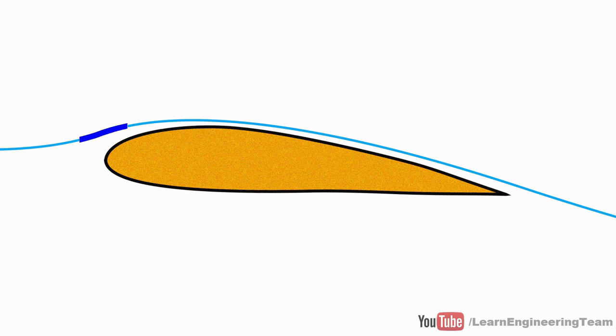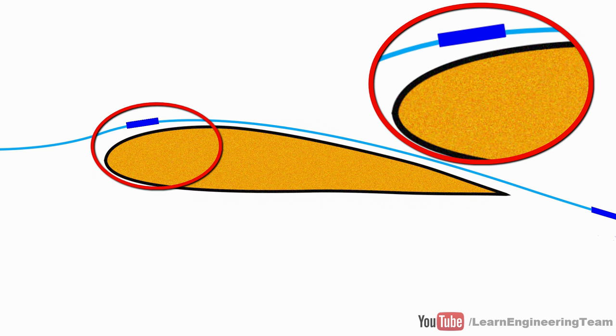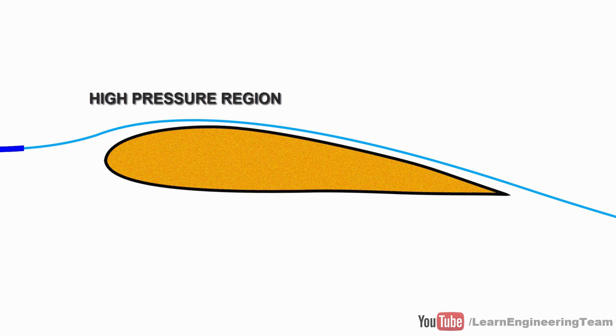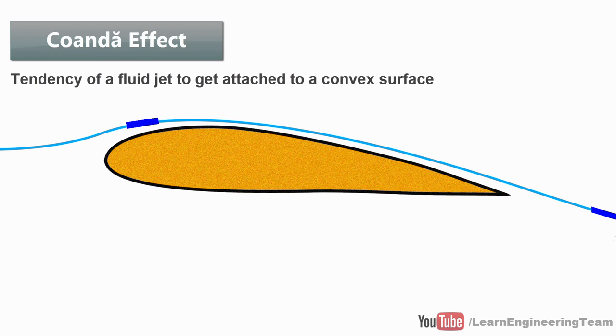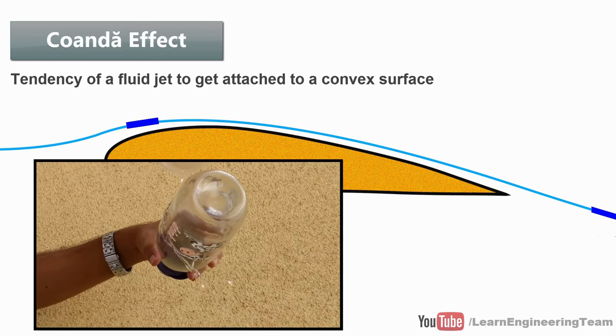The particle approaches the airfoil and takes a curve as shown. But after the curve, why doesn't it move straight as shown? Examine this curved motion more closely. In order to take the curve, there should be more pressure at the top of the particle than at the bottom. This will supply the centrifugal force. The higher pressure pushes the particle downwards, which is why the flow is always attached to the airfoil. This effect is known as the Coanda effect. There is a simple experiment to demonstrate this fact.